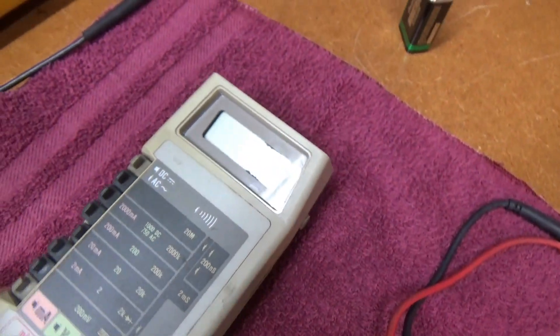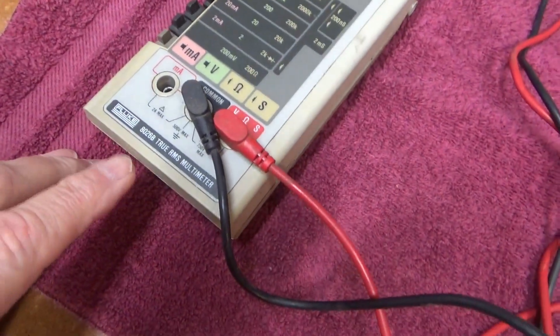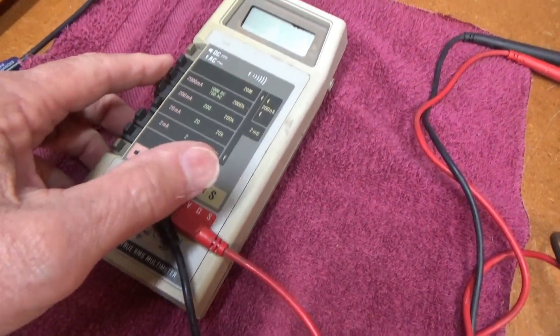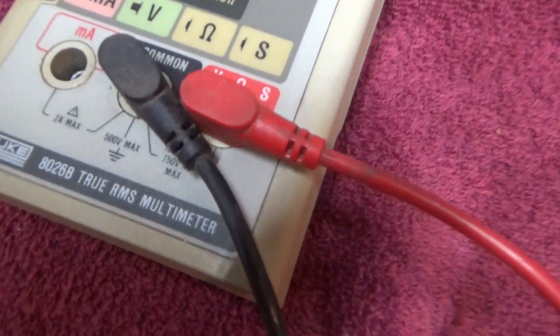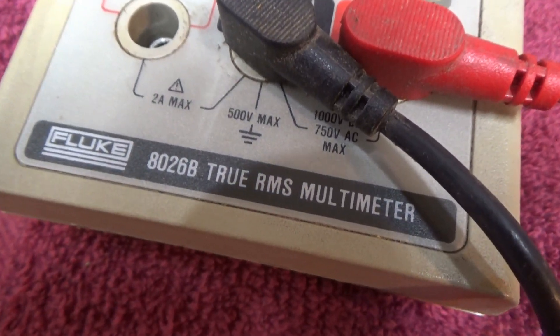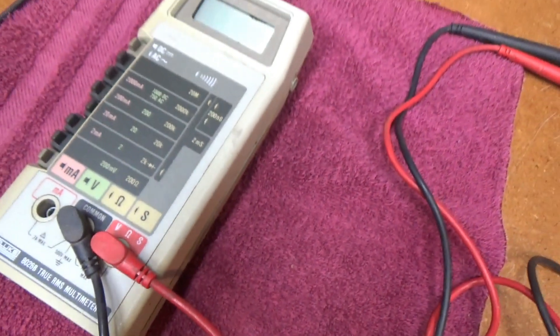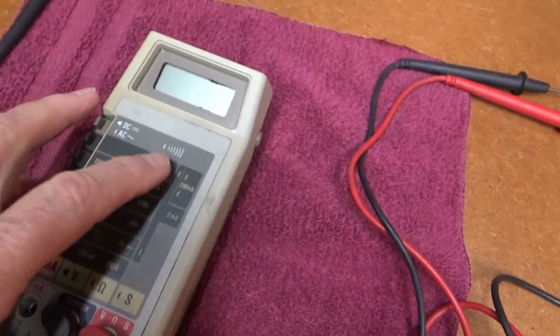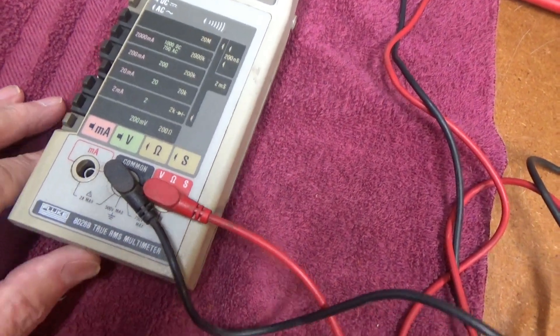All right, just added to my Fluke collection today. This is one of the manual ranging early ones, the Fluke 8026B True RMS Multimeter. Very cool. This has some of the later features like a continuity tester and True RMS reading.